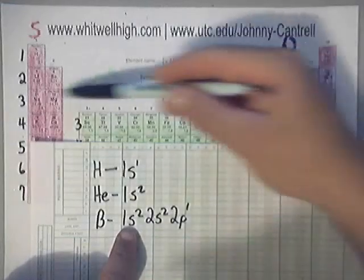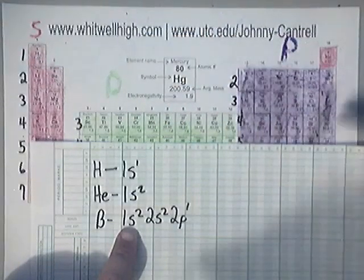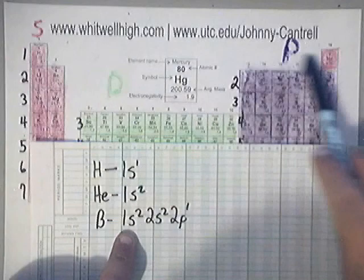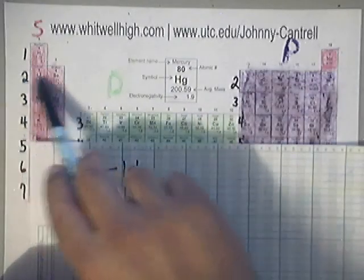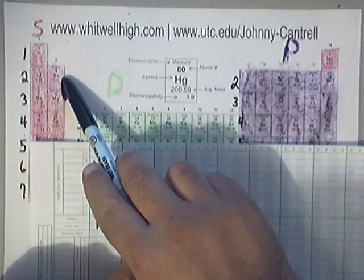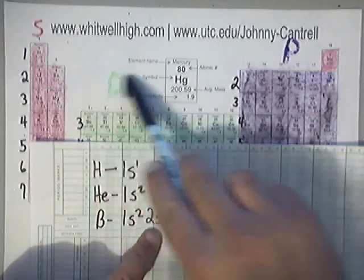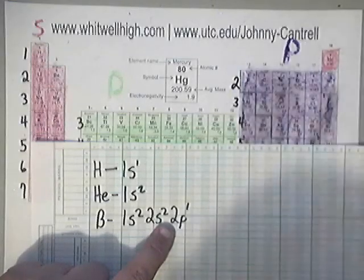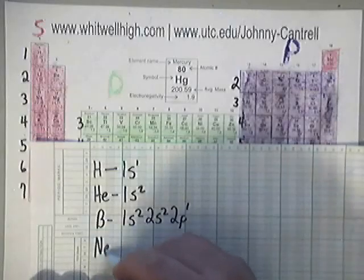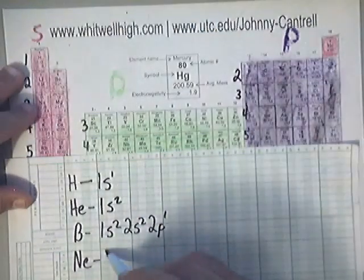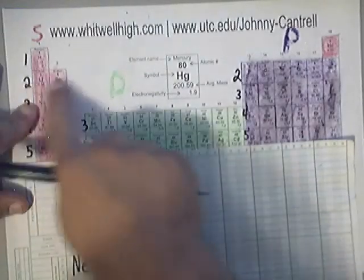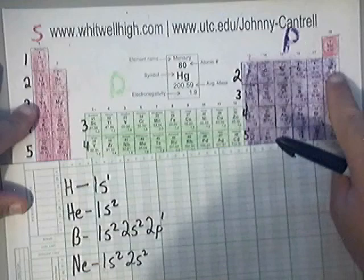You have to write down the last color and row that you exit out of. The 1s² gets written down because you pass up both of those pink (s) positions. The 2s² gets written down because you pass up both of those pinks as well. After that, you're entering into a new color, so the last entry you write is your current location: 2p¹. For neon, you pass up 1s², write that down, pass up 2s², and then land in 2p⁶.